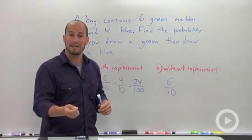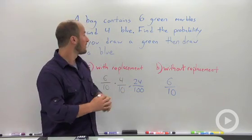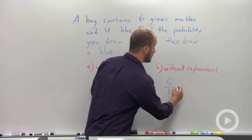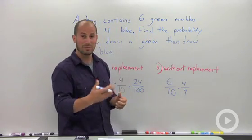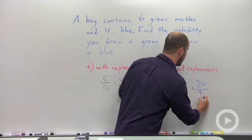We don't put that back. So now instead of dealing with 10 marbles we're now dealing with nine. We want to grab a blue. There are four blue so the probability is now four-ninths that we grab that blue. Multiply these probabilities together. We end up with 24 out of 90.